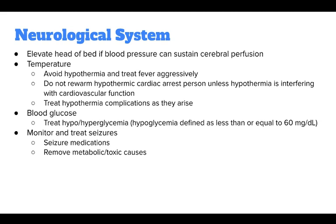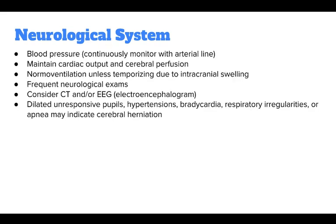For the neurological system, elevate the head of bed if blood pressure can sustain cerebral perfusion. Regarding temperature, avoid hypothermia and treat fever aggressively. Do not rewarm a hypothermic cardiac arrest patient unless hypothermia is interfering with cardiovascular function, and treat hypothermia complications as they arise. For blood glucose, treat hypo- or hyperglycemia; hypoglycemia is defined as less than or equal to 60 mg/dL. Monitor and treat seizures with seizure medications, and remove metabolic or toxic causes. Continuously monitor blood pressure with an arterial line, maintain cardiac output and cerebral perfusion, and conduct frequent neurological exams. Consider CT and/or EEG.